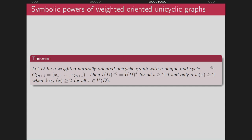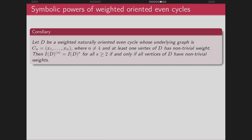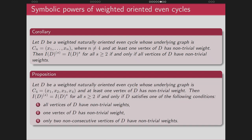We also proved that for a unicyclic graph with a unique odd cycle of length 2n+1, the symbolic and ordinary powers are equal for all S ≥ 2 if and only if the weight of those vertices whose degree is greater than or equal to 2 must be greater than or equal to 2. For a naturally oriented even cycle of length not equal to 4, this equality holds if and only if all vertices have non-trivial weights (weight ≥ 2). For a cycle of length 4, equality holds if one of these conditions is satisfied: all vertices have non-trivial weights, one vertex has non-trivial weight, or only two non-consecutive vertices have non-trivial weights.